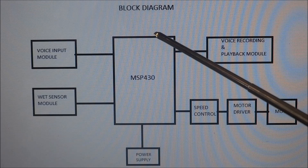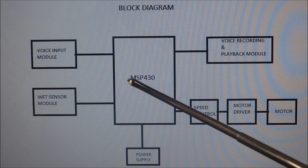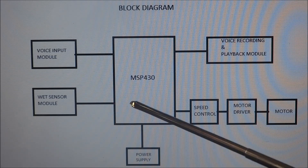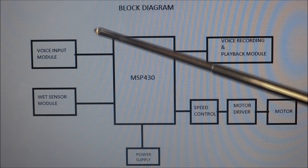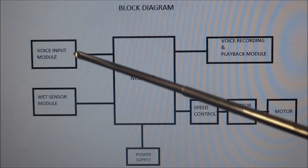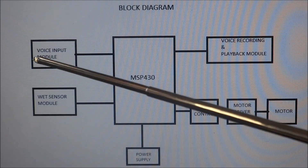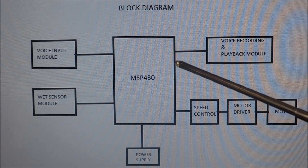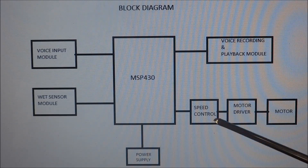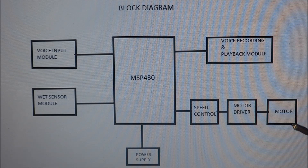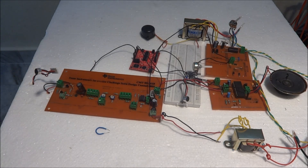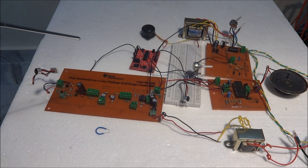Here is the block diagram of our design. We have used IC MSP430 G2553, a low power microcontroller manufactured by Texas Instruments, which is the main part of our design. These are the input and output sections interfacing with the MSP430 microcontroller. The input sections are the wet sensor and voice module input. The output sections are the voice recording and playback module, motor controller block connected to speed controller and motor driver. In this design we are using eight TI ICs and one non-TI IC.